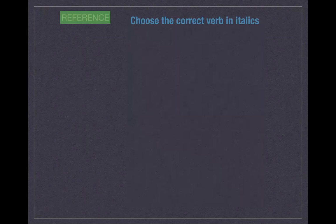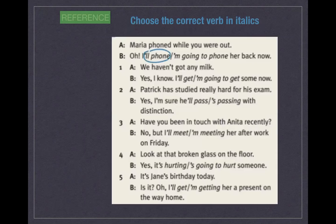Now choose the correct verb in italics. For example: 'Maria phoned while you were out' or 'I will phone her back now.' It's an intention and decision made while speaking, so that's why 'I will phone her back now.' Stop the video and do the exercise.